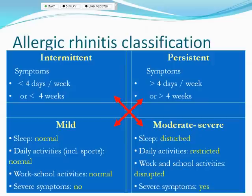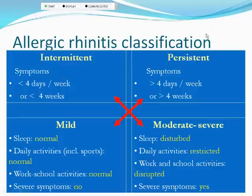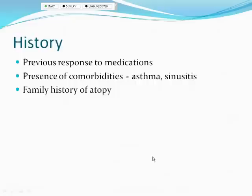The classic classification for allergic rhinitis is seasonal versus perennial, which is what's typically used in FDA filings for new antihistamines or nasal steroids. However, the ARIA guidelines from the World Health Organization classify rhinitis more like asthma: intermittent versus persistent, and mild versus moderate-severe, based on frequency — more or less than four days per week — and whether there are disturbances in sleep, daily activities, work, or school.